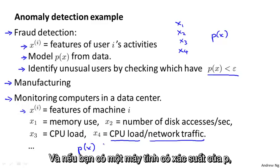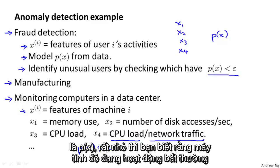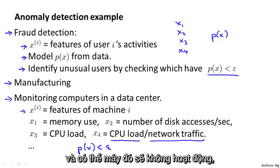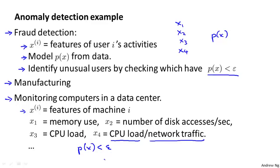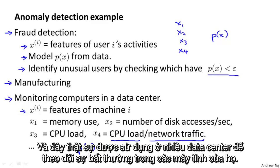And if you ever have a machine whose probability of x, p of x is very small, then you know that machine is behaving unusually and maybe that machine is about to go down. And you can flag that for review by system administrator. And this is actually being used today by various data centers to watch out for unusual things happening on their machines.